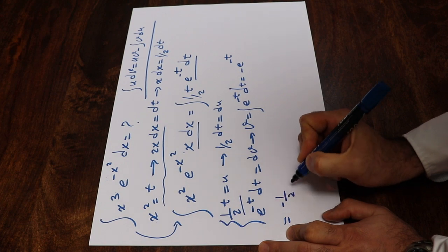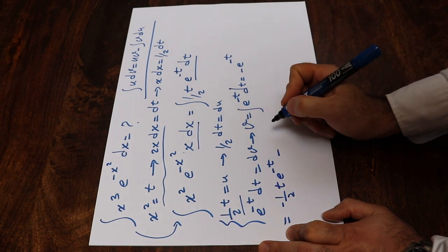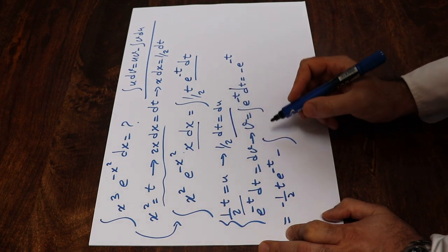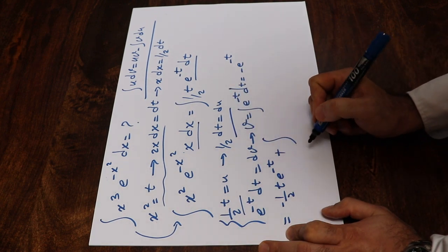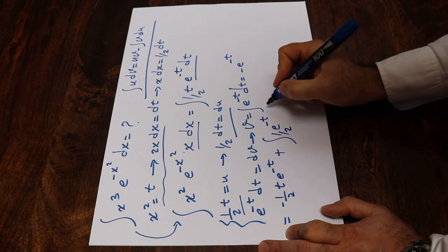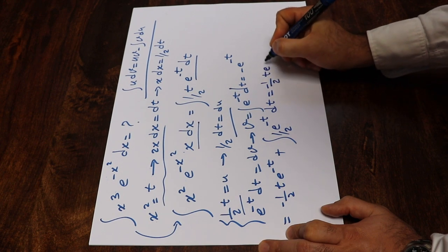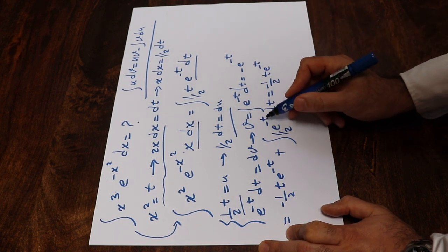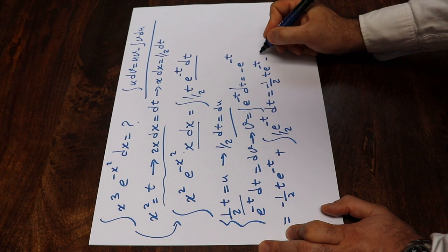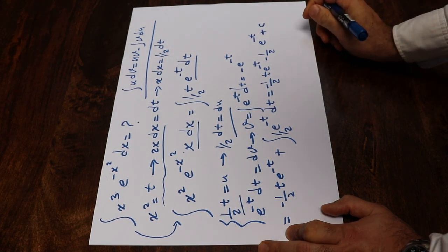Substituting into the formula, the integral equals u·v, which is minus (1/2)·t·e^(−t), minus the integral of v times du. The minus times minus gives plus, so plus the integral of e^(−t) times (1/2) dt. This works out to minus (1/2)·t·e^(−t), and the integral of e^(−t) gives minus e^(−t), so minus (1/2)·e^(−t), plus C, the constant of integration.